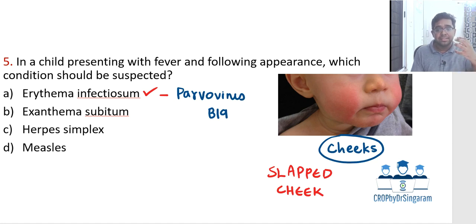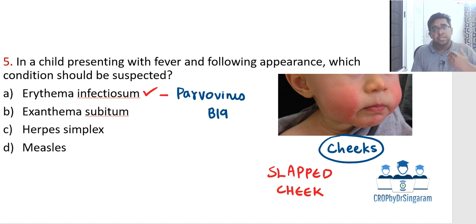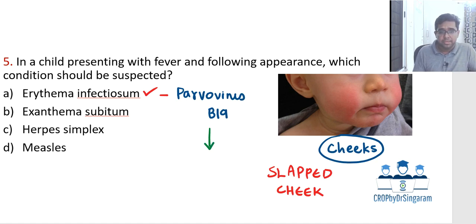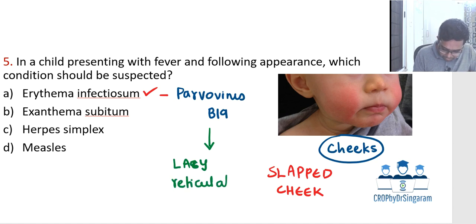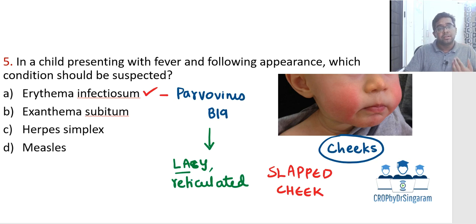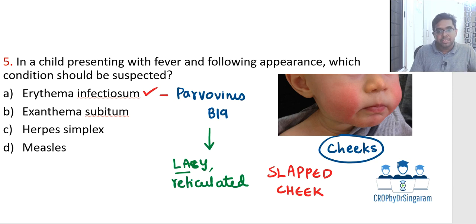After the face is involved, the rash spreads to the rest of the body — the trunk and extremities. When it spreads, the center area becomes clear, producing what we call a lacy reticulated appearance of the rash. So to summarize: in the face it is called slapped cheek appearance; over the rest of the body it is called lacy reticulated appearance. These are two very important characteristics of erythema infectiosum that are repeatedly asked.